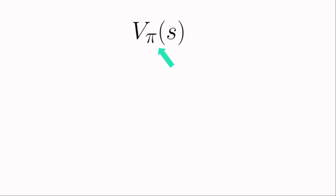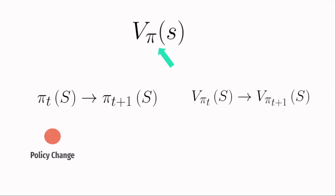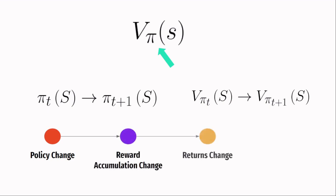What does this mean? It means that the values of all the states are tied to a particular policy. If the policy changes, the values will also change. If the policy changes, your behavior in the environment changes, the rewards you get change, the returns you estimate change, and thus the values will also change. So it's very important to keep this in mind.